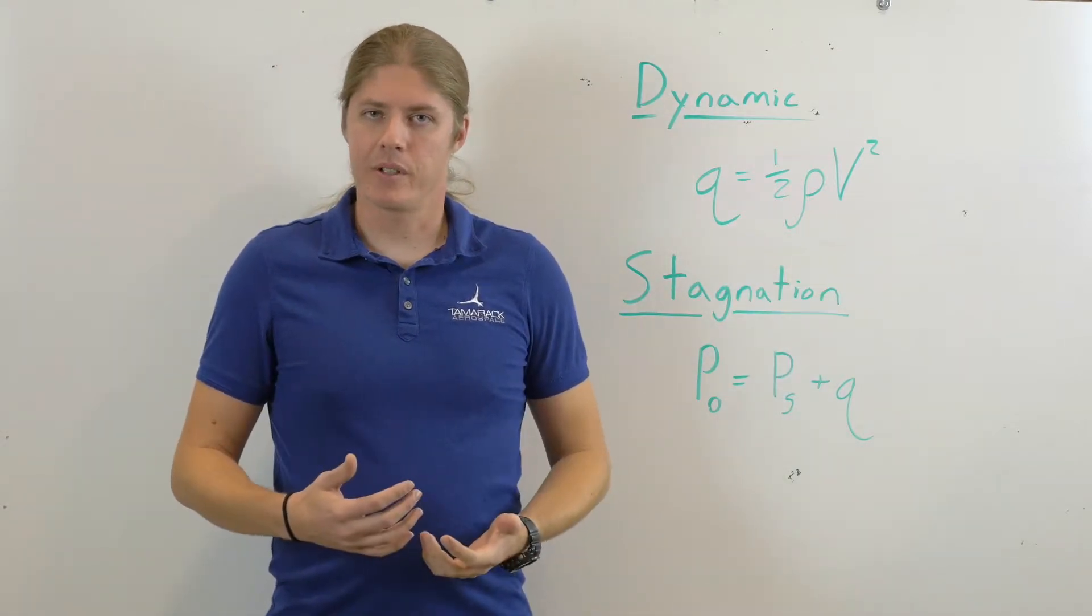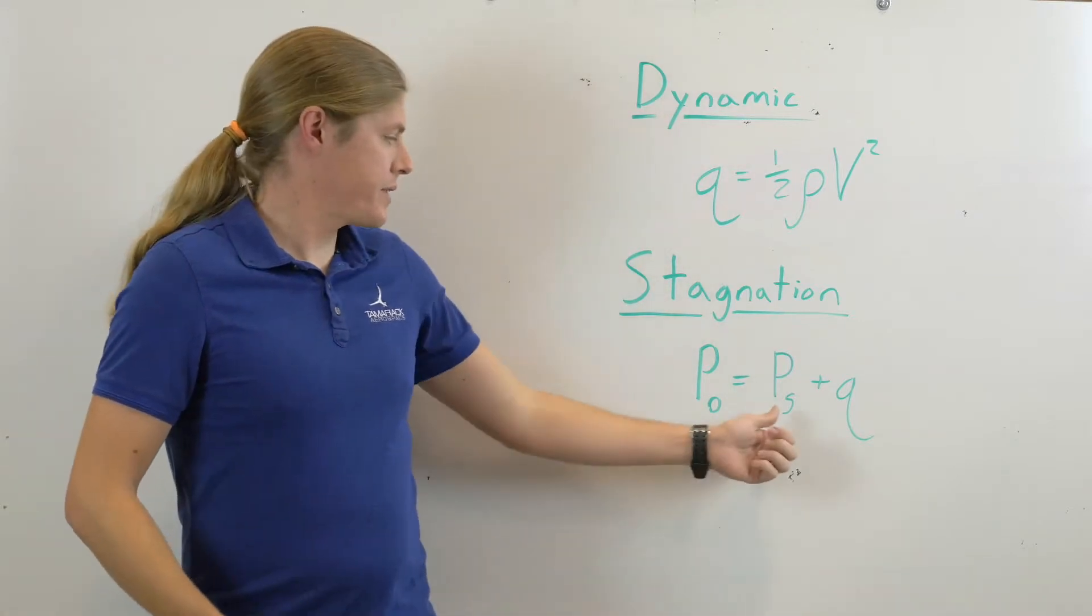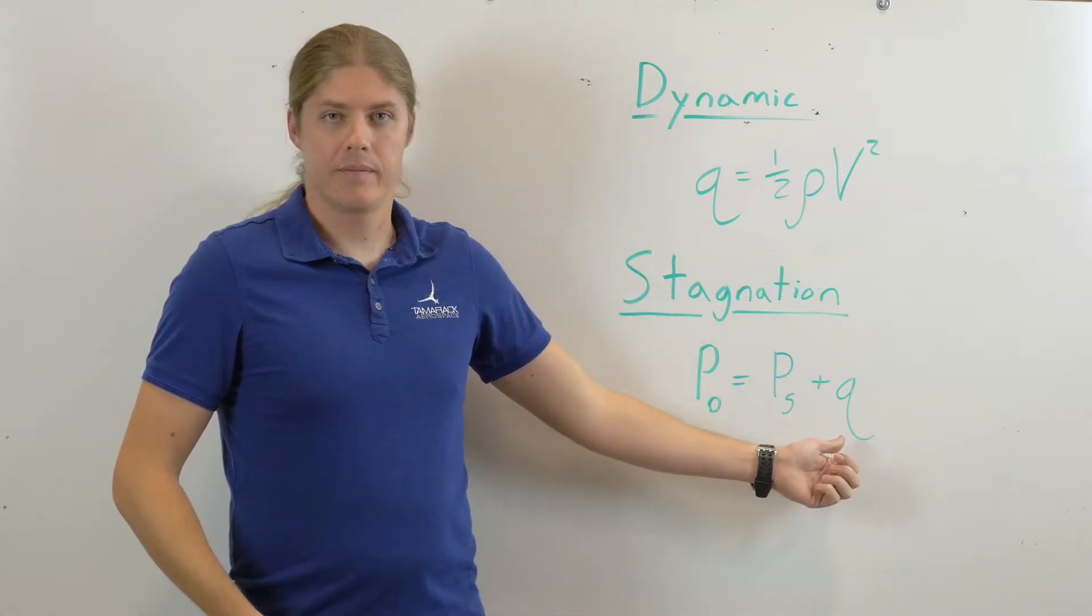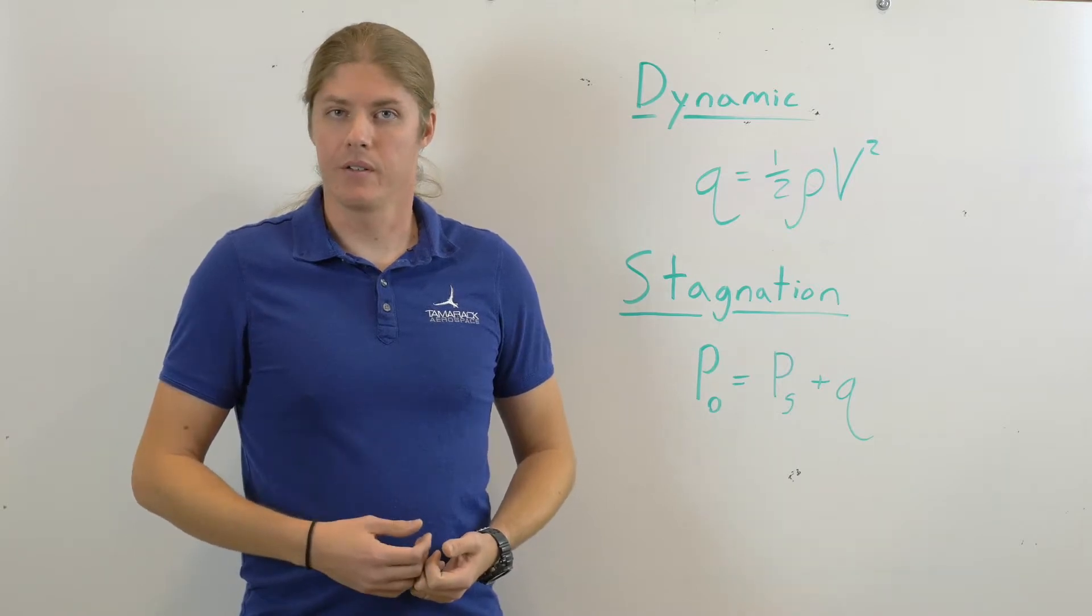The stagnation pressure is a combination of these two. It's the sum of the static pressure and the dynamic pressure. This is what a pitot tube measures in an airspeed indicator, for example.